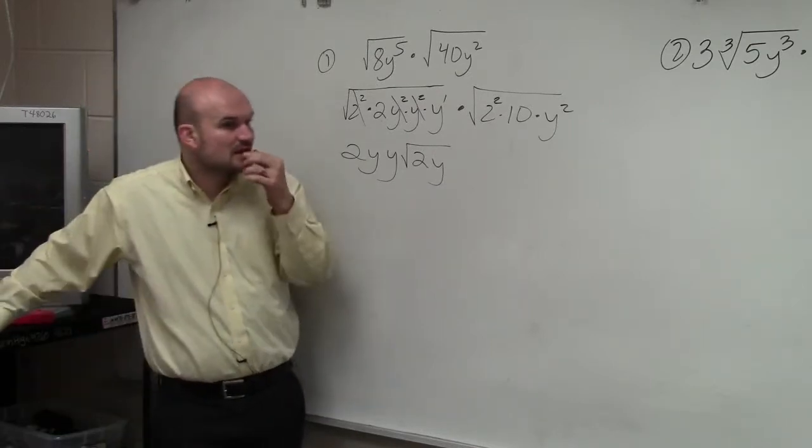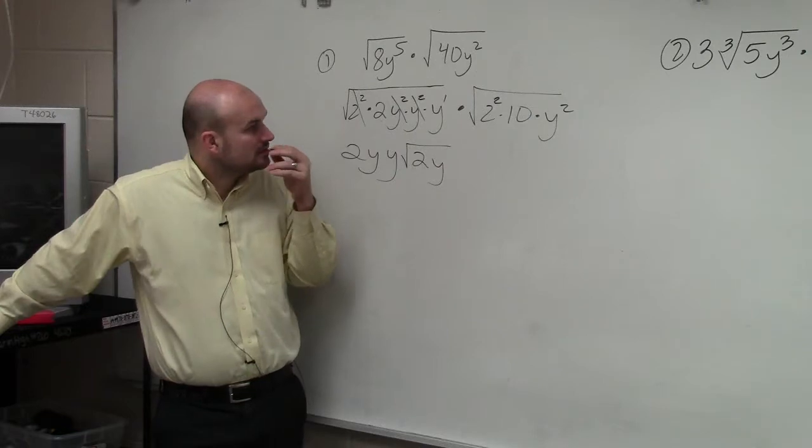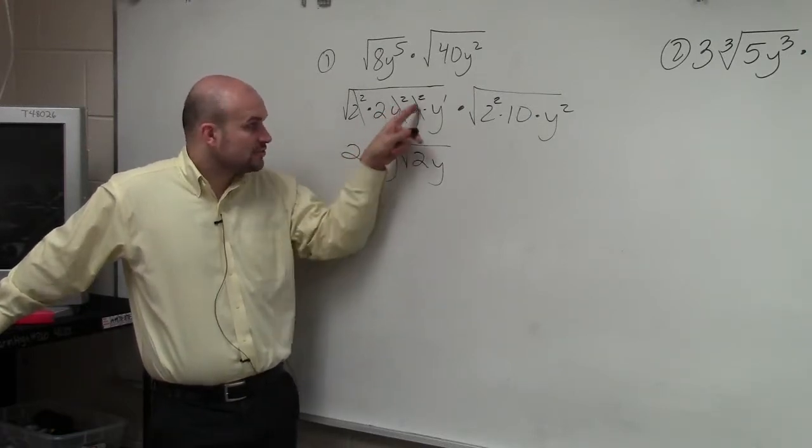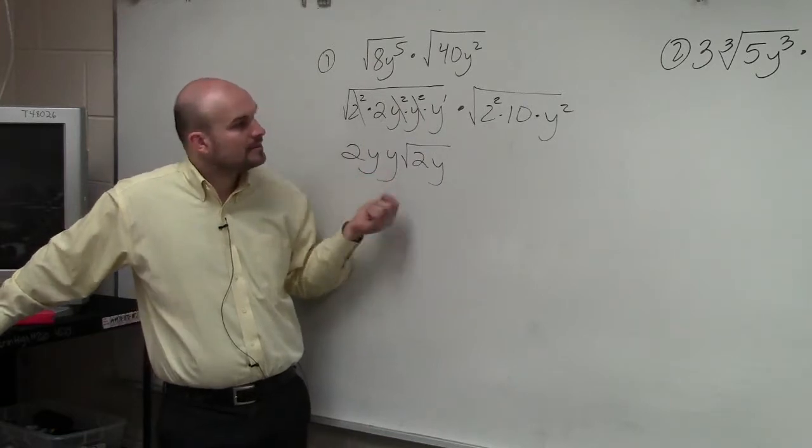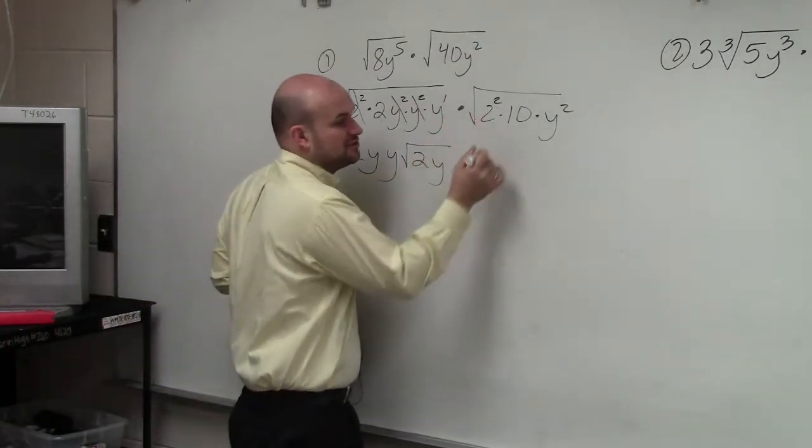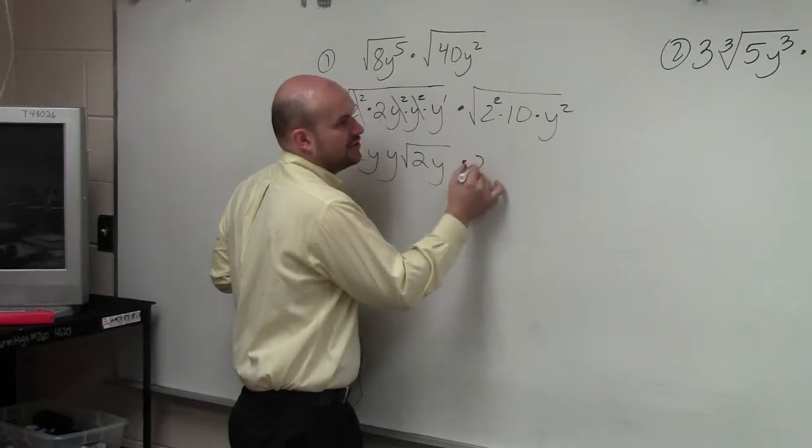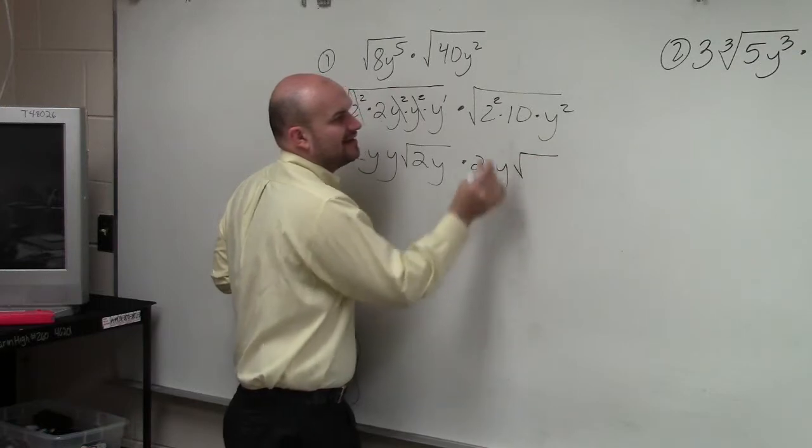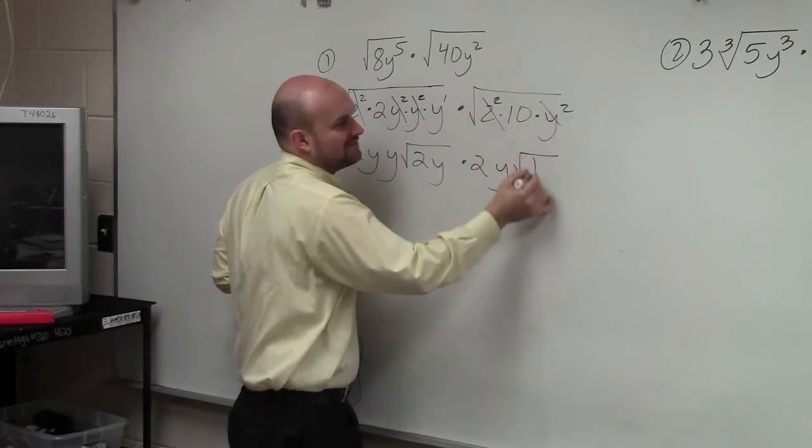I'm kind of confused. Why is there 2 of them on the outside? Because the square root of y squared is y. The square root of y squared is y. I'm not done yet. So now, we do this one. The square root of 2 squared is 2. And the square root of y squared is y. And then I have leftover, I have 10.